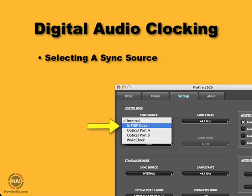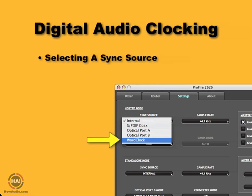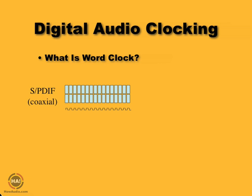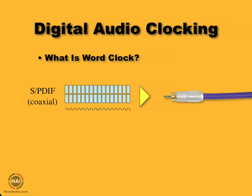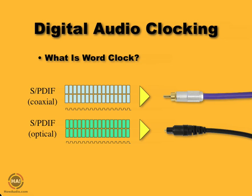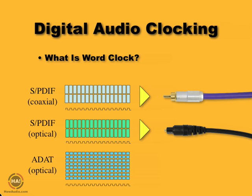Now there's one more option on the list that might not make sense: optical port, ADAT optical — those things make sense. But what's word clock? To understand word clock, we've got to look at what's in our digital signals. Inside an SPDIF coaxial cable, we have data and the clock signal mixed together inside that RCA jack. Similarly, optical SPDIF has left and right data plus the clock signal all in one cable. Even ADAT optical works the same way — eight channels of data and one clock signal in one cable. A word clock is just the clock signal without any data — the clock by itself.